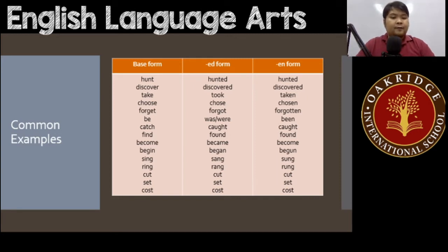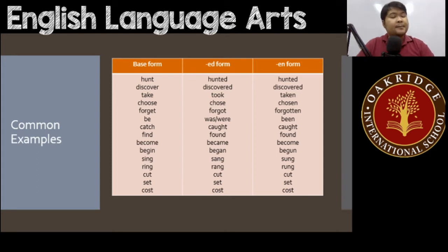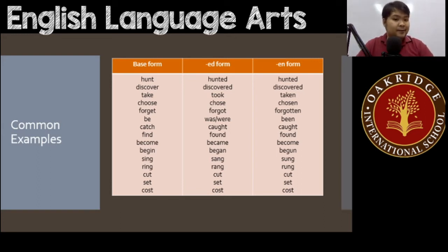'Catch' is an irregular verb where the ed and en forms are actually the same — 'catch' becomes 'caught' and 'caught.' Similarly, 'find' becomes 'found' in both the ed and en forms.